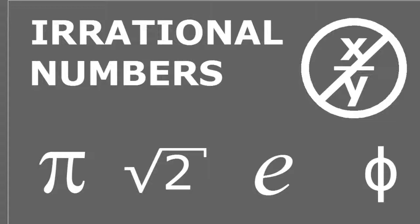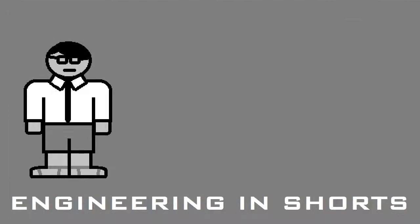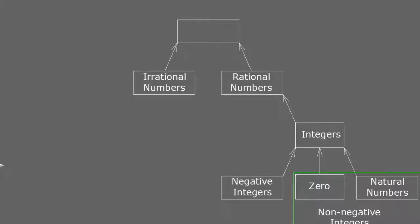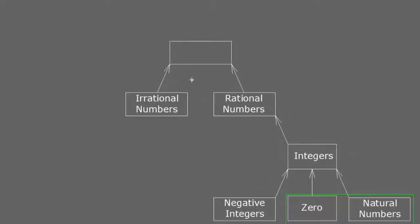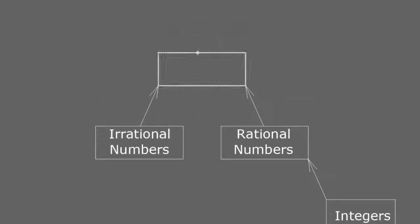Let's see some of these irrational numbers. Previously, we talked about the integers and how they belong to a bigger set of numbers called the rational numbers. Now, we will concentrate on the irrational numbers, and by the end of the video, we will see what is the name of the set of numbers which contains both the rational and the irrational numbers.